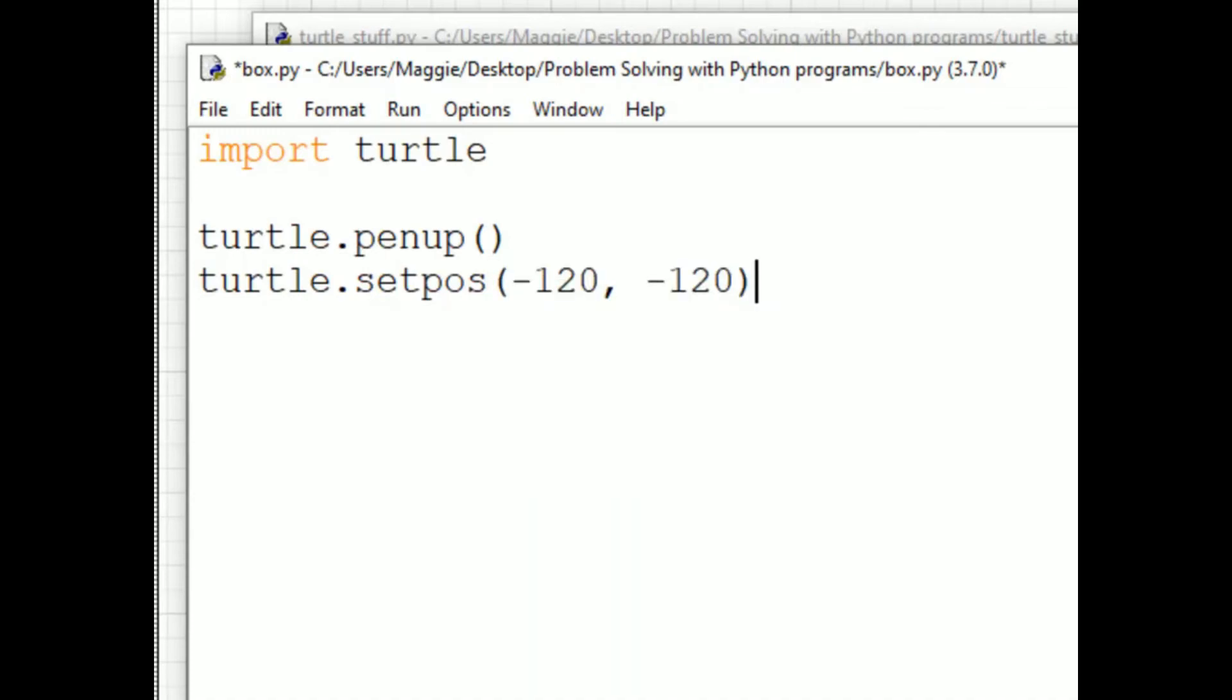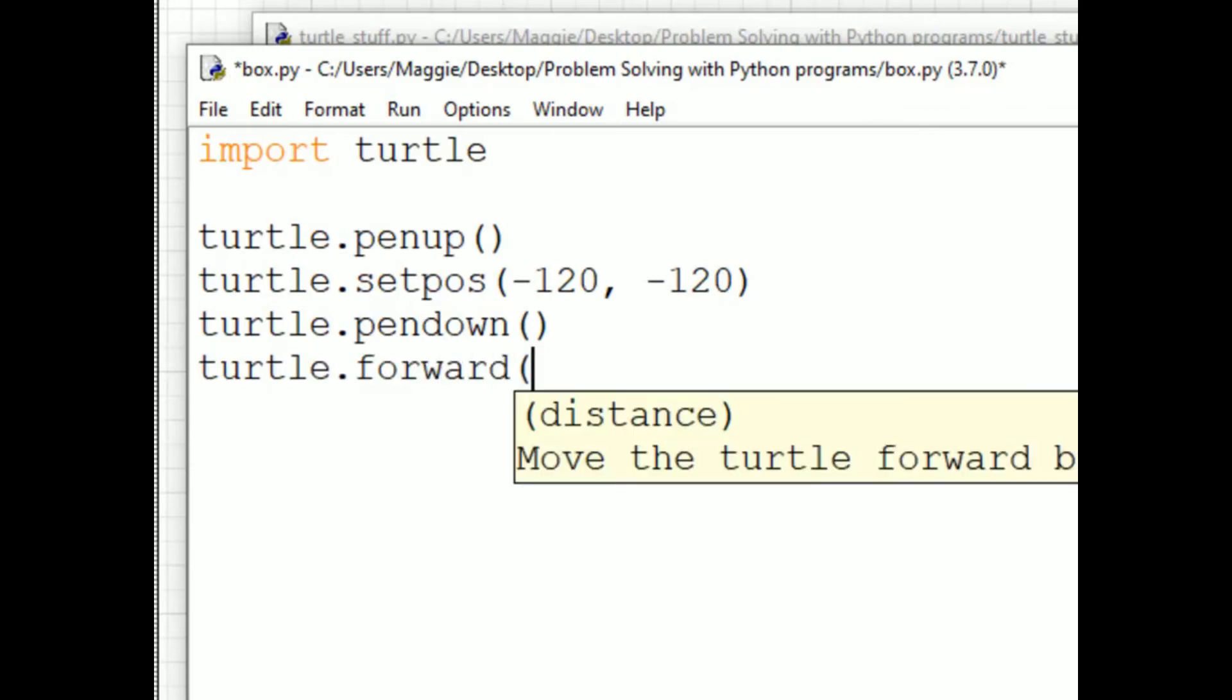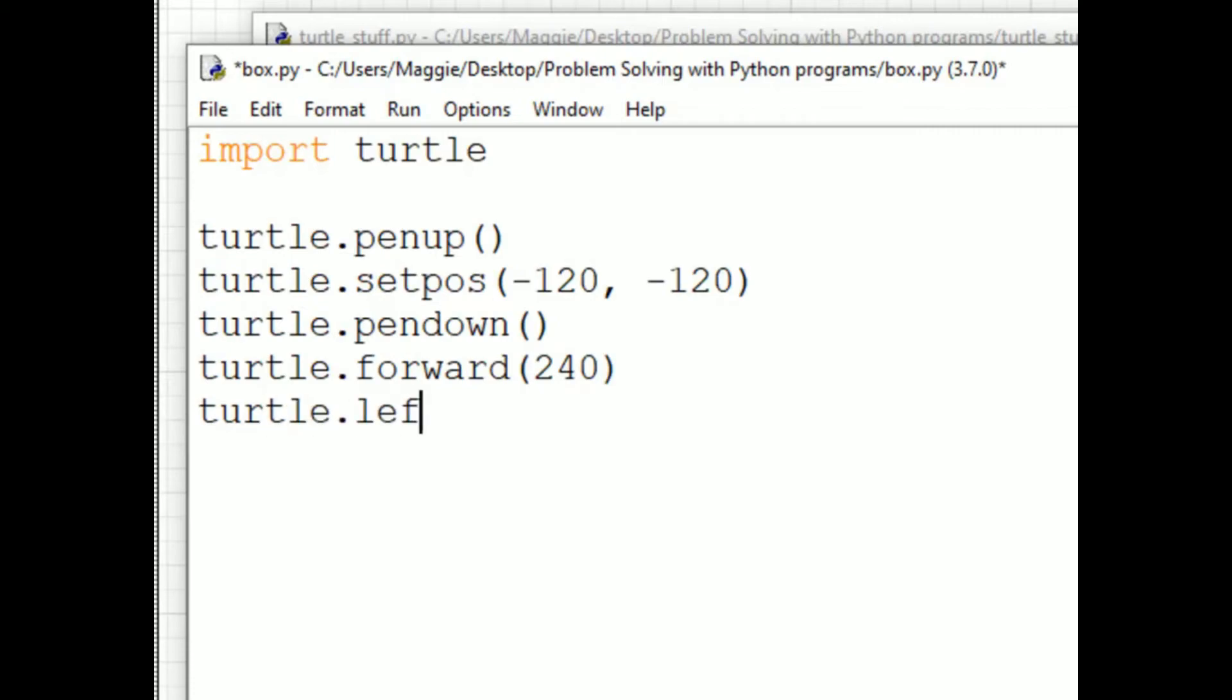Now I'm going to write turtle.pendown() because I want to start drawing. And then I have a series of forward and left commands, turtle.forward(240), turtle.left(90) each on its own line.